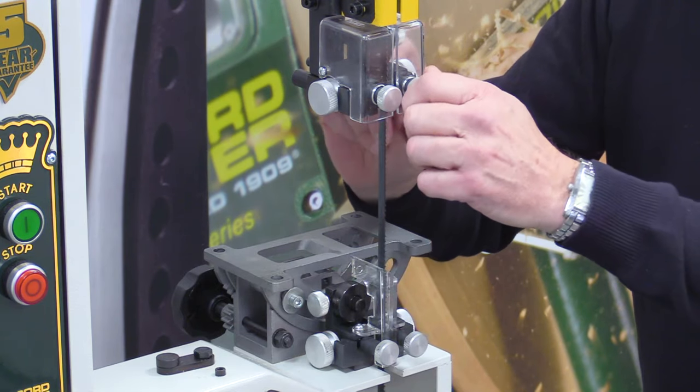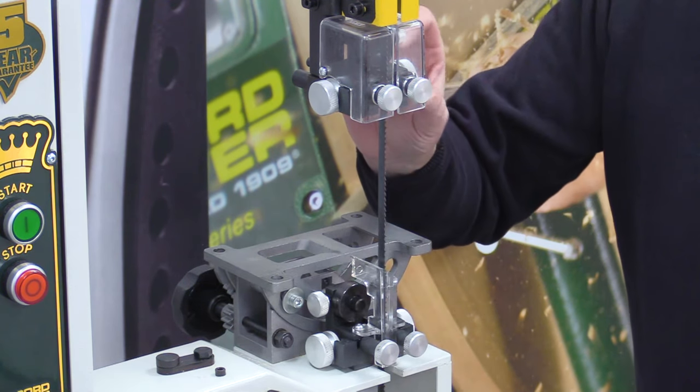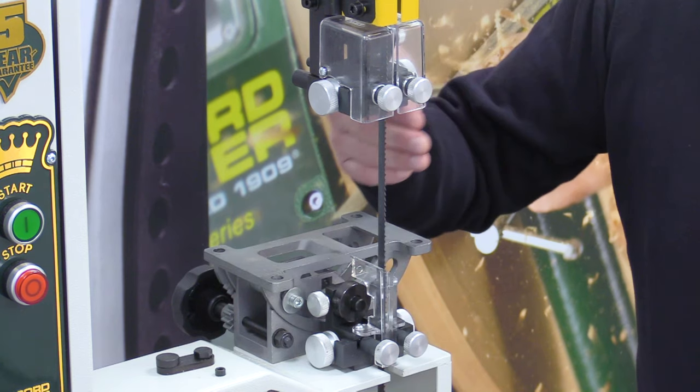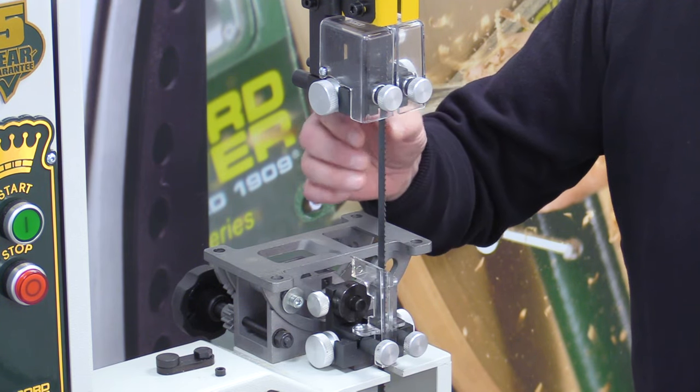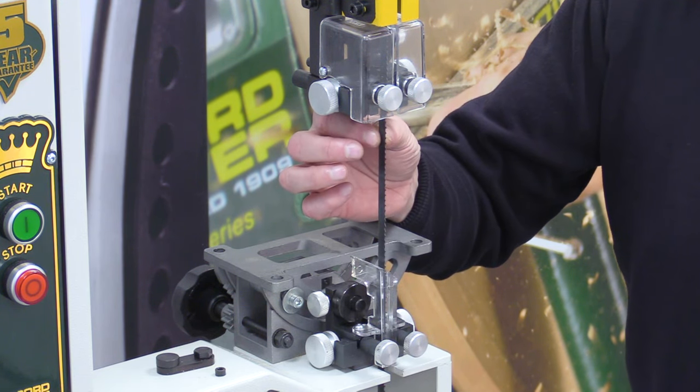Same above, just undo the locking screws and we turn these in and out so it can get as close to the blade without touching it and give the maximum support that's required.